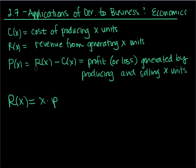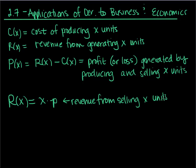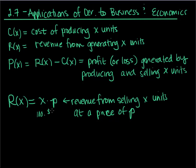This is a lowercase p, not an uppercase P — I'll sometimes write it as a fancy P to make the distinction clear. Revenue is the amount from selling x units at a price of p. For example, if I have 100 t-shirts and I want to sell them for $20 each, that's 100 shirts times $20 per shirt, and I would make $2,000.